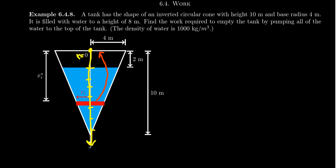We're going to consider what is the work to take one cross section up to the top of the tank at x equals zero. This is where we have to be a little more creative with these work problems. Remember, work fundamentally is force times distance. A distance has to be traveled and a force has to be exerted. The distance traveled is fairly simple — the distance from the top of the cone to our cross section is going to be x. So the distance we have to travel is x meters to take that cross section to the top of the cone. What force is being done here? When it comes to lifting — pumping the water to the top of the tank is a lifting problem.